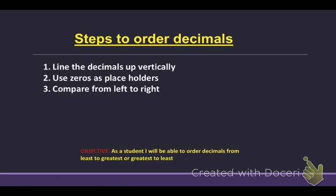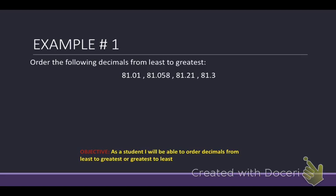And our steps to order decimals. Very quickly, we have three steps. I want you to write all three of them down on your graphic organizer. The steps to order decimals look just like comparing decimals. Number one, you need to line the decimals up vertically. Number two, you need to use zeros as placeholders. Three, compare from left to right. And that is it. Those are the three things. So here we go. We're going to start with example number one.